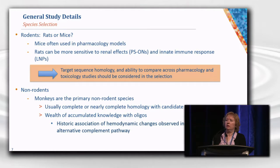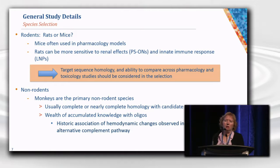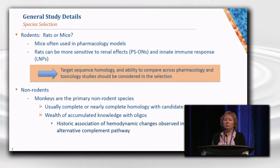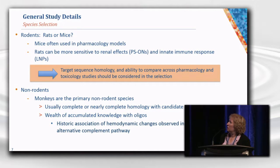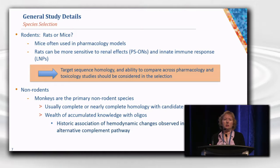For species selection, it's expected that you'll have a rodent and a non-rodent species. For the rodent, the question is mouse or rat — and the answer is both are used and appropriate. Mice are often used in pharmacology studies, so there's already information known about dose ranges and effects. Rats also are used and tend to be more sensitive for some specific findings, including renal effects and immune responses. Ultimately, target selection and sequence homology should be considered, along with the ability to compare data across pharmacology and toxicology studies.